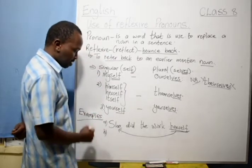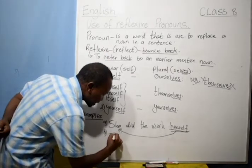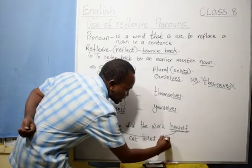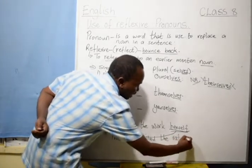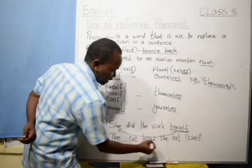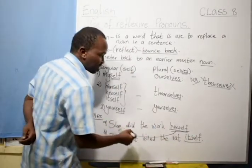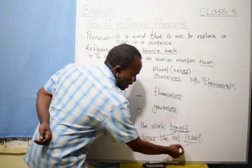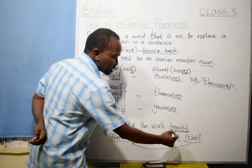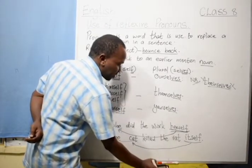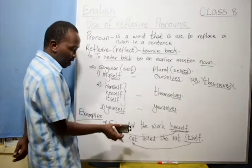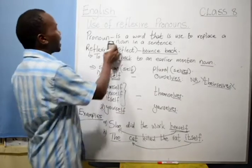Number B, which is another sentence that we can have. The cat killed the rat itself. The cat killed the rat itself. So therefore, itself is referring to the cat. What the cat did? The cat killed the rat itself. We can see that the reflexive pronouns are used to refer either to a noun or a pronoun that has been used in a sentence.